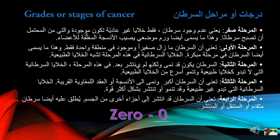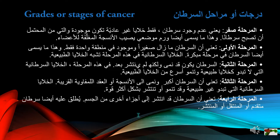Stage 0 is also called carcinoma in situ. Stage 1 means the cancer is small and only in one area — also called early stage cancer. Cancer cells in this stage resemble normal cells. Stage 2: the cancer has grown but hasn't spread. In this stage, cancer cells don't look like normal cells and are growing faster than normal cells.